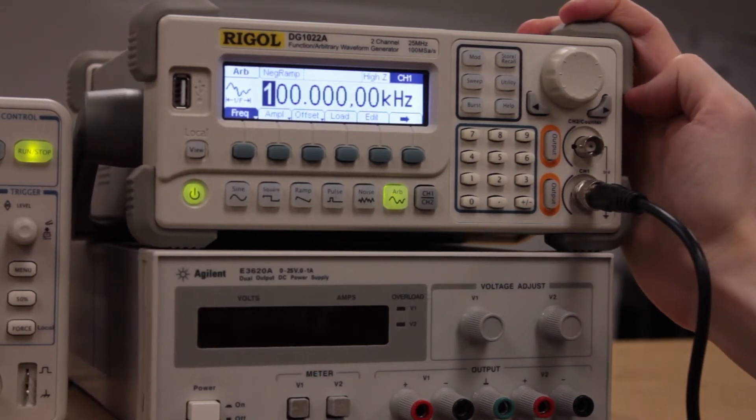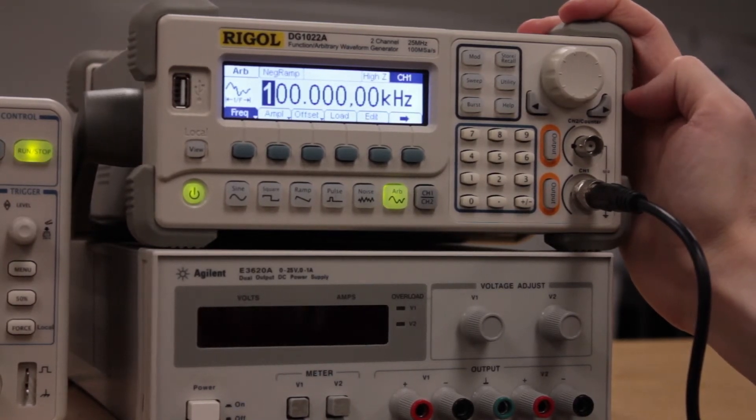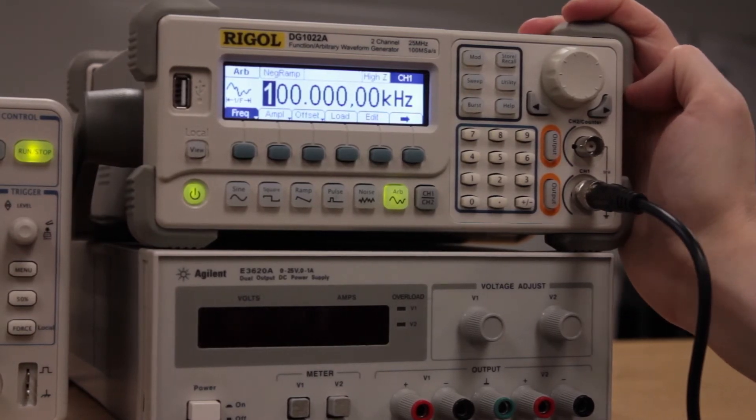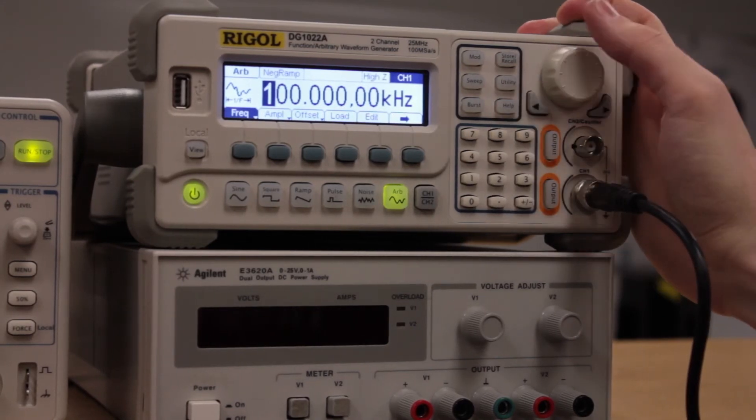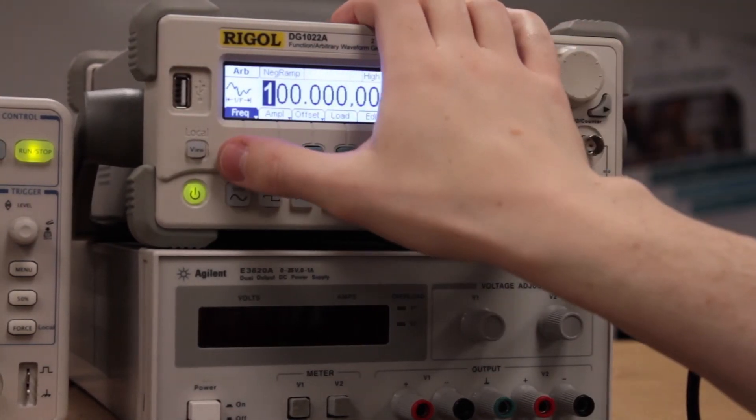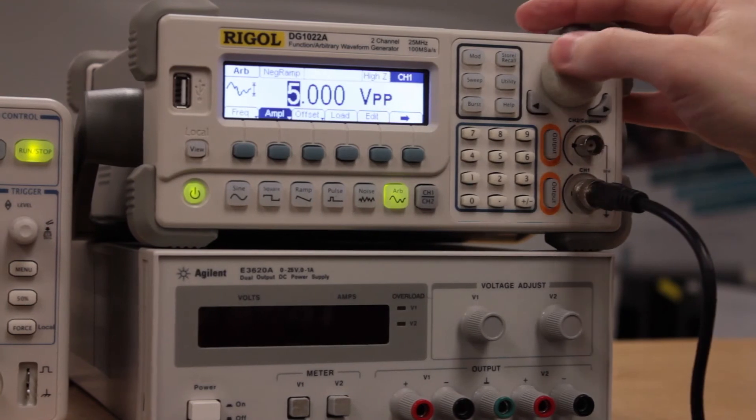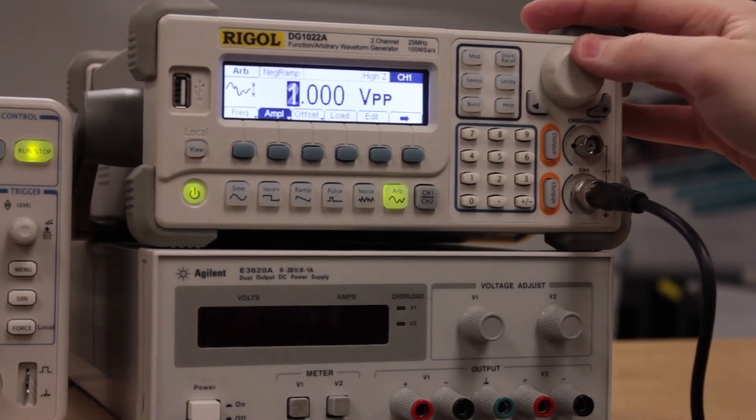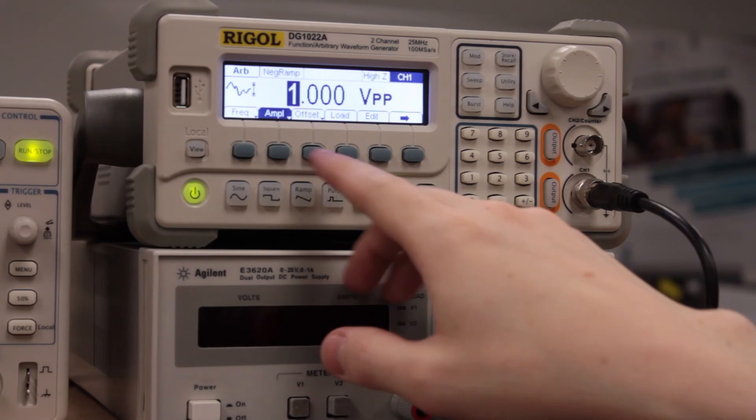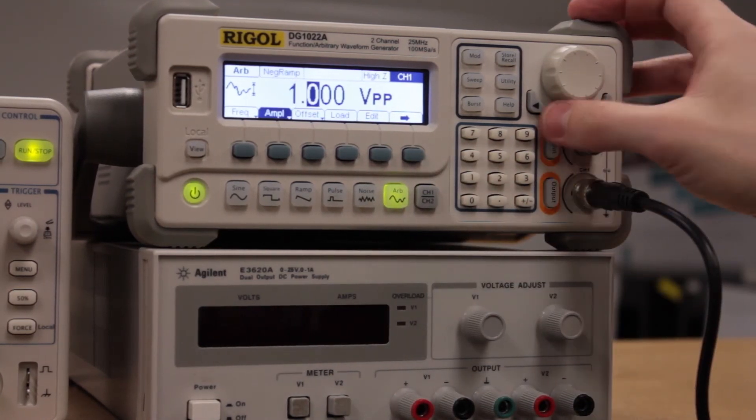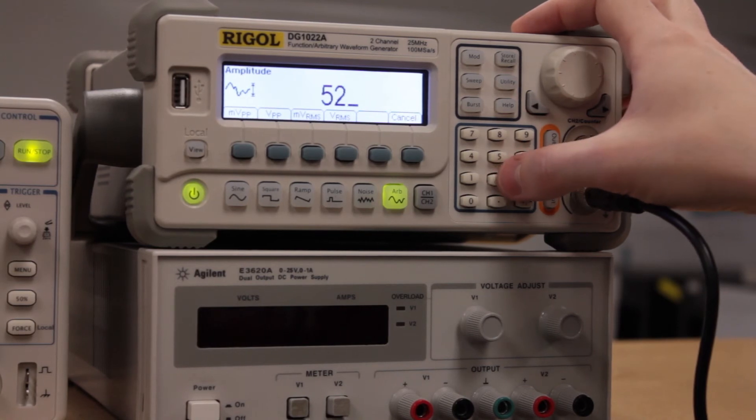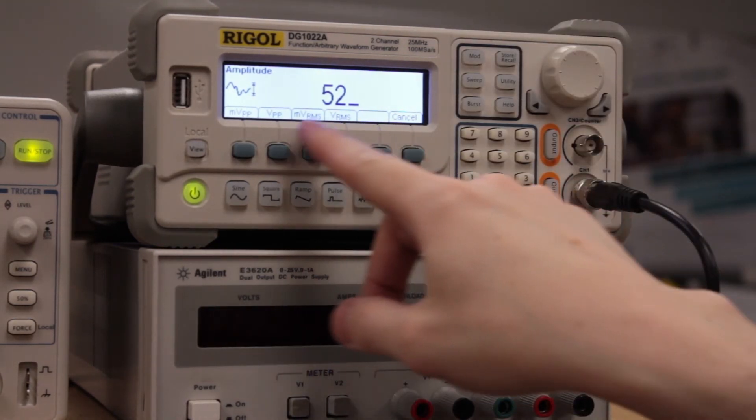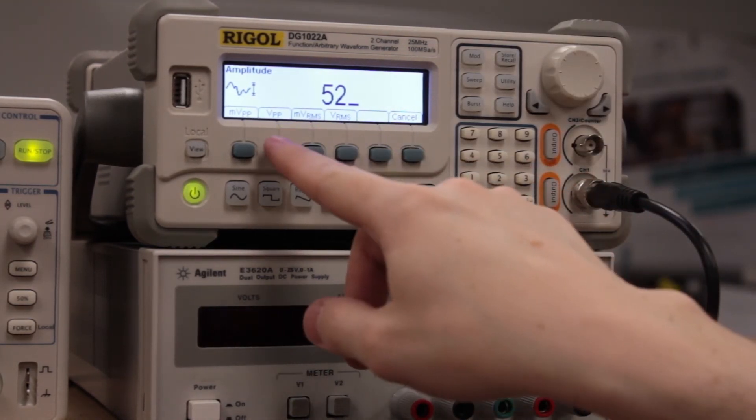That's pretty much it for this. You won't use much else. The main thing is when you're setting frequency and amplitude, you can use the wheel here to set this, or you can actually use the cursors here to move to a value and then type in what you want. You can see we can have RMS or peak to peak, and that pretty much covers it.